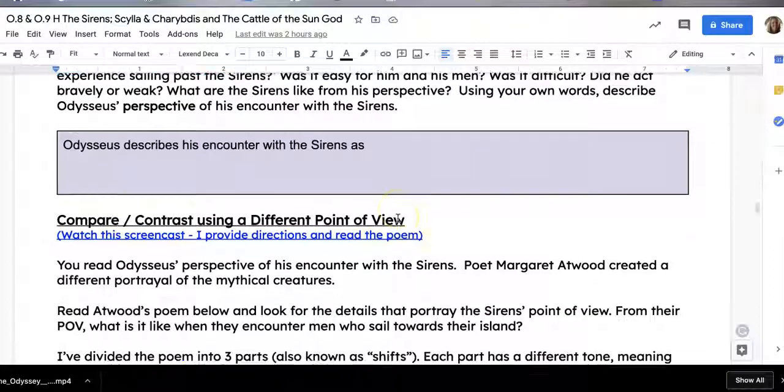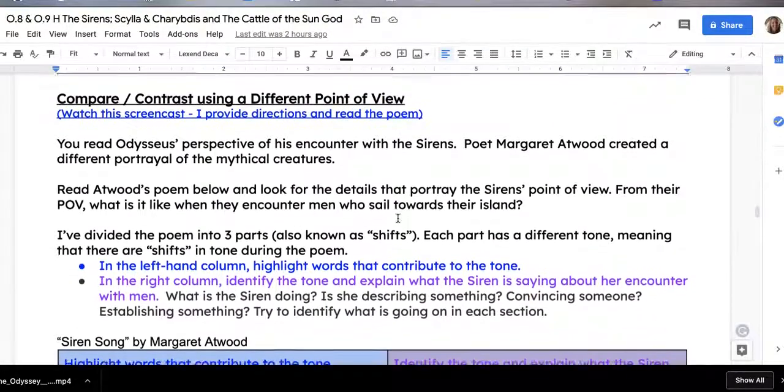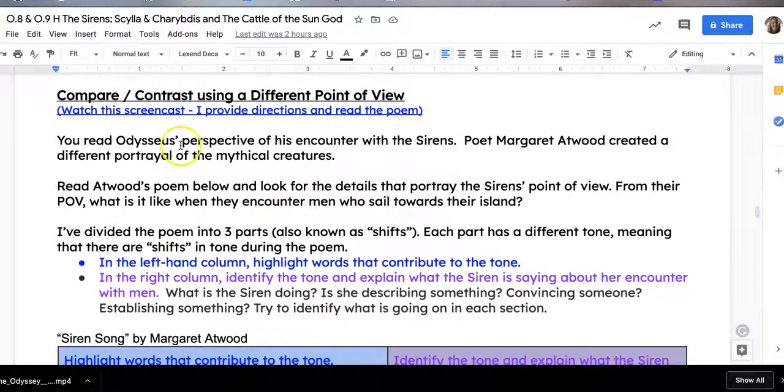Then you're going to take a different point of view. You already read Odysseus' perspective of his encounter with the Sirens. Now, poet Margaret Atwood created a different portrayal of the mythical creatures. So you're going to read Atwood's poem below and look for the details that portray the Sirens' point of view. From their point of view, what is it like when they encounter men like Odysseus who sail towards their island? So the contrast is between Odysseus' point of view and the Sirens' point of view.